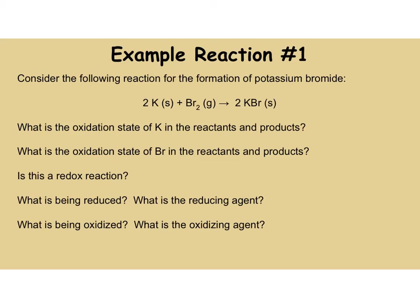The best way to practice is through practice problems. In this redox reaction, write the oxidation states over their heads. K is by itself, so it's zero. In the products it's plus one because it makes plus one ions in KBr. Bromine is zero because it's a diatomic gas, and in the compound it's minus one to balance out the potassium. The next question: is this a redox reaction? Yes — because the substances changed oxidation states.